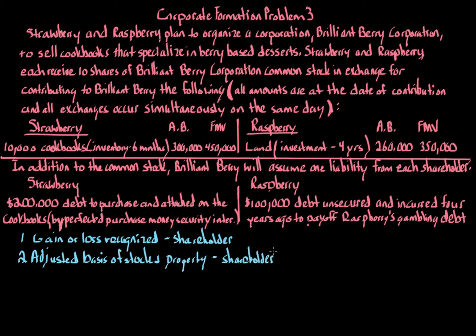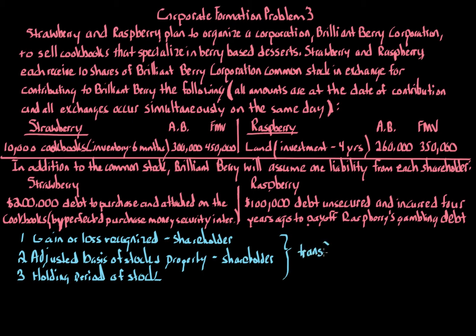The only property received by these shareholders is the 10 shares of stock. The third step is to determine the holding period of the stock. Since both shareholders hold the stock as a capital asset, this matters — if they sell later, it will be a capital gain or loss, and we need to know whether it's long-term or short-term. Remember that steps one through three deal with the transferor shareholder, not the corporation. We have to go through steps one, two, and three for both Raspberry and Strawberry.